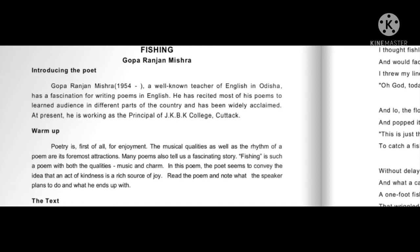Let's start by introducing our poet. The name of our poet is Goparanjan Mishra. He was born in 1954. He is a very well-known poet in Orissa. He is an English teacher and currently working as a principal in JKBK college, which is Jatya Kavi Deer Kishordas college — a government college located in Cuttack. He is a very fun-loving person and his poetry is full of enjoyment. Whenever he goes out in summers, he enjoys going near the pond and tries fishing — that is his favorite pastime.